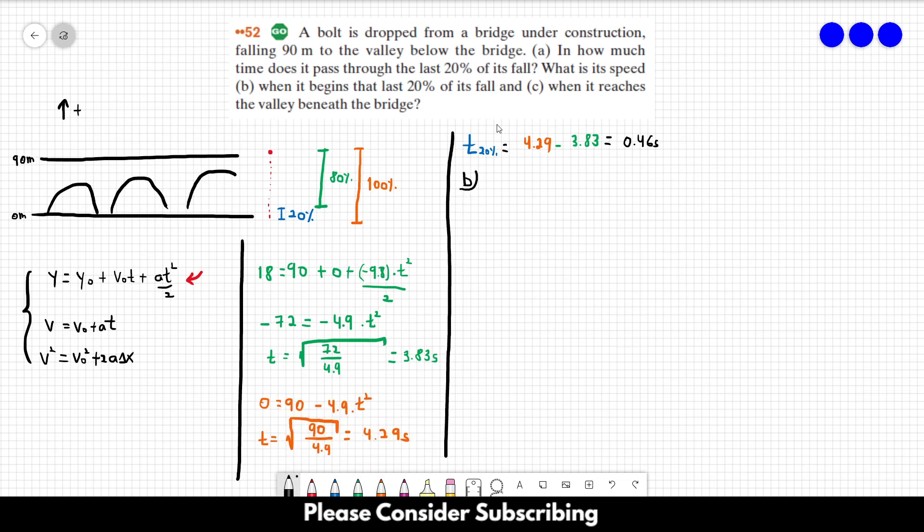In letter B, it says, what is its speed when it begins that last 20% of the fall. This is pretty easy. We can use this second equation over here. And the velocity or the speed is v equals v0 plus At.